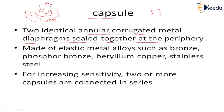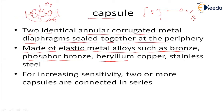The sensitivity of the capsule is equal to output — that is change in displacement — divided by input — that is pressure. The capsule is made up of two angular corrugated metal diaphragms sealed at the periphery. The capsule is also made up of the same elastic metal alloys used in diaphragms: bronze, phosphor bronze, beryllium copper, and stainless steel.